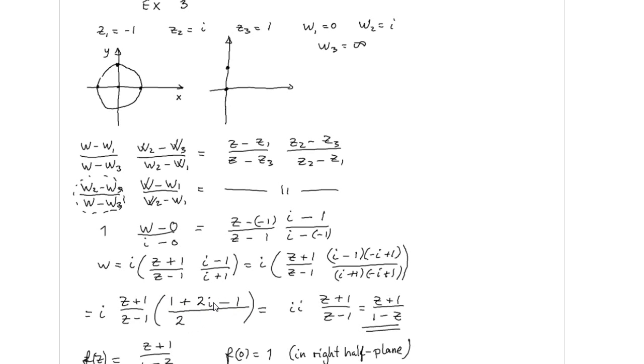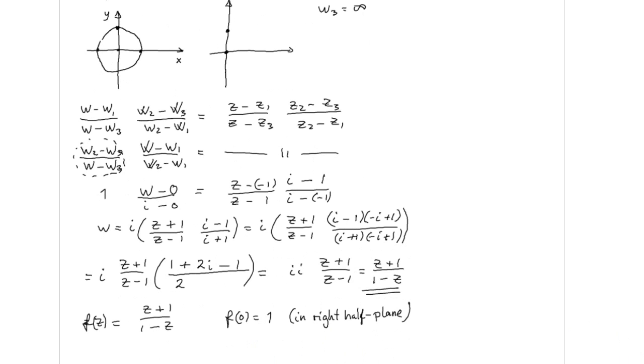So this is only 2i, 1 plus 2i, and i is multiplied with i, giving us minus 1. So w turns out to be equal to this Möbius transform: z plus 1 over 1 minus z.